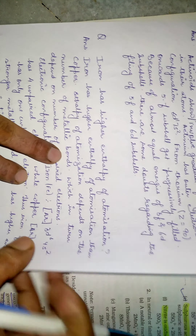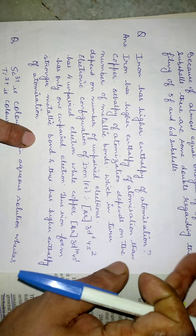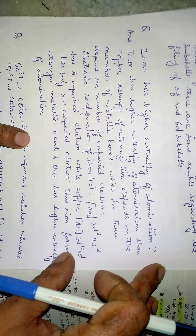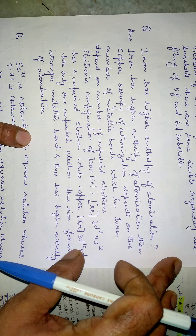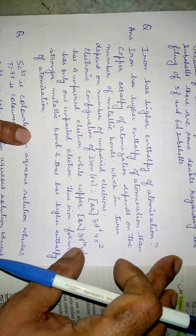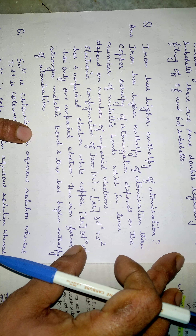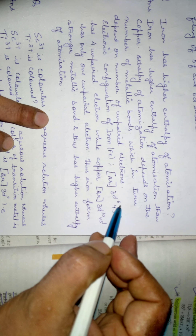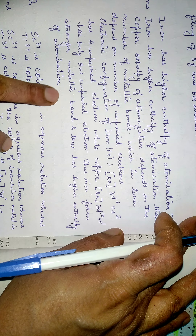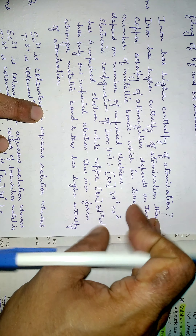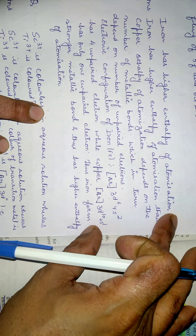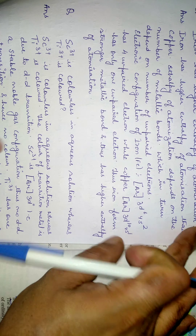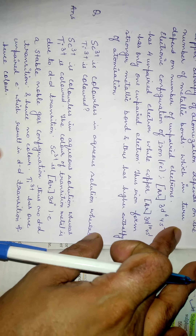Next question: why does iron have a higher enthalpy of atomization than copper? The enthalpy of atomization depends on the number of metallic bonds, which in turn depends on the number of unpaired electrons. Iron has the configuration [Ar] 3d6 4s2, giving it four unpaired electrons, while copper has [Ar] 3d10 4s1, giving it only one unpaired electron. Therefore, iron forms stronger metallic bonds and has a higher enthalpy of atomization.